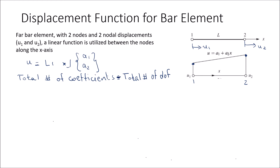In order to evaluate these coefficients, we use boundary conditions. At x equals 0, this is at node 1, we have U equals U1. If I substitute x equals 0 into the equation, I can conclude that U1 must be equal to A1, or A1 equals U1. So here I've solved for the first coefficient.